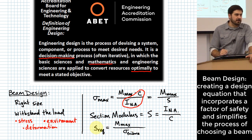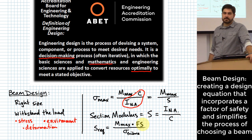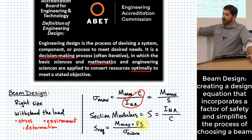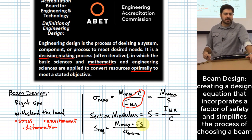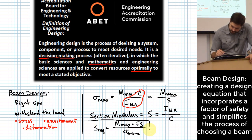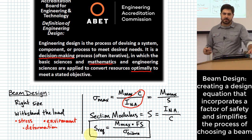The factor of safety is the stress that causes failure divided by the working stress. This gives us the design equation: S_required = (M_max × FS) / σ_failure. This equation allows us to select a required section modulus so that we can withstand the maximum bending moment with a factor of safety and not exceed our failure stress.